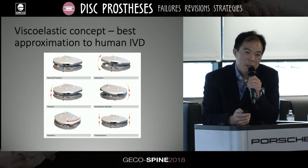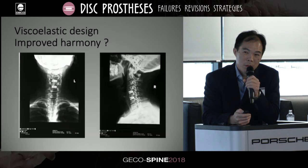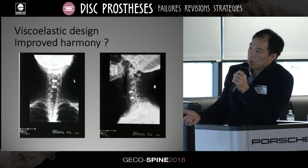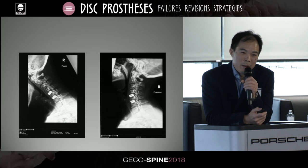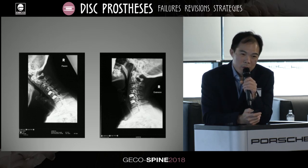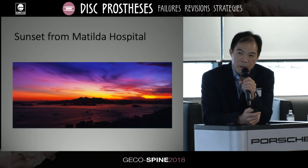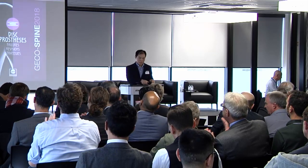Viscoelastic implants may be an answer. I've switched to viscoelastic because of these problems, and so far I haven't experienced the inharmonious movement issue with them. They have elasticity and a spring-back-to-zero mechanism. In flexion-extension they seem to balance much better, possibly because of a certain stiffness that avoids the ball-bearing stacking problem. I've only used this implant for about a year, so longer follow-up is needed, but so far results are promising.